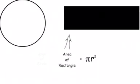So now, base times height becomes pi r times r. Combine the r's together and we have pi r squared, which is equal to the area of the rectangle, which is equal to the area of the circle.